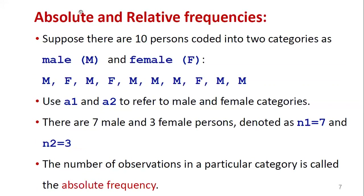Coming to absolute and relative frequencies — these two are very important for handling statistical analysis as well as graphical tools. Let us start with an example: there are 10 persons coded into two categories, male and female. We use the letter M for male category and F for female category. The 10 persons' categories are: M, F, M, F, M, M, M, M, F, M.